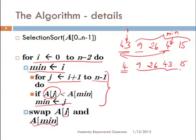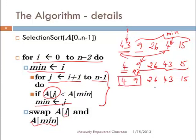Now we start the remaining elements with i equals 1, starting at 9. We assume 9 is the smallest and look at all the other numbers. It turns out no other number is smaller than 9, so 9 itself is the minimum. Both i and min point to 9, so we swap 9 with itself — the array remains 4, 9, 26, 43, 15. So 4 and 9 are already in sorted order; we still have to sort the remaining three elements.